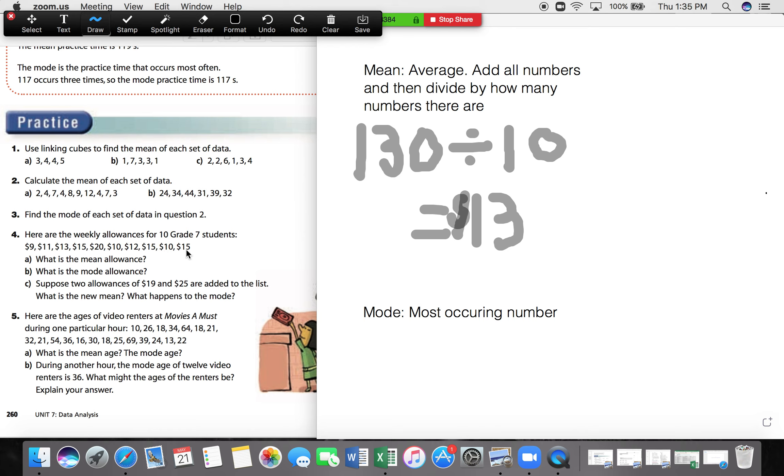So what number occurs most in this set of data? The mode would be $15. So the most occurring wage that these students get for an allowance every week is $15. So there's part A and part B.